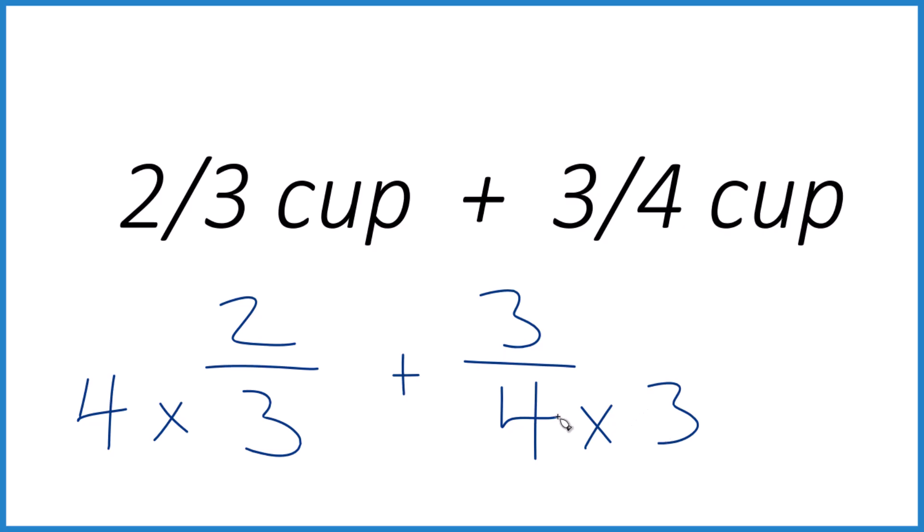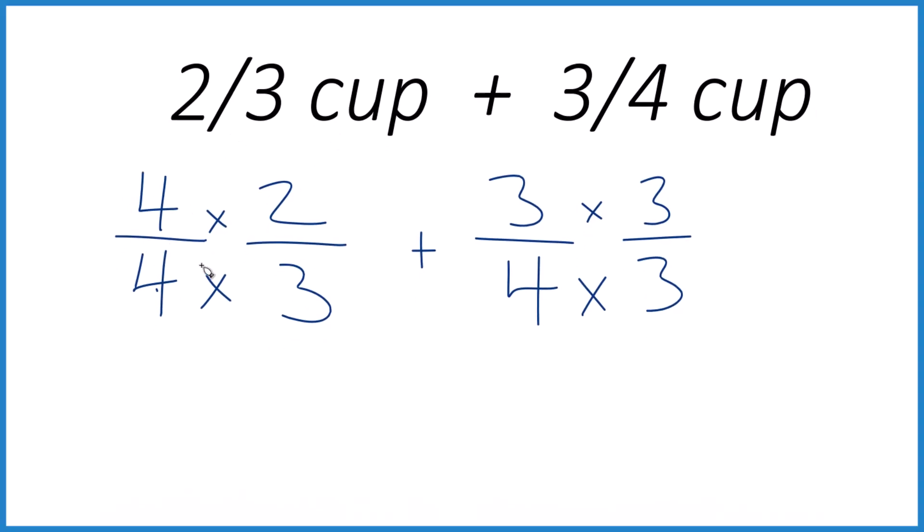That would give me the same denominators. But I can't just do it to the denominators. I need to also multiply the numerator. So here I'm going to multiply four times two, because four over four is just one. So I'm not really changing anything. Then over here, three over three is one. And now I can do the multiplication.